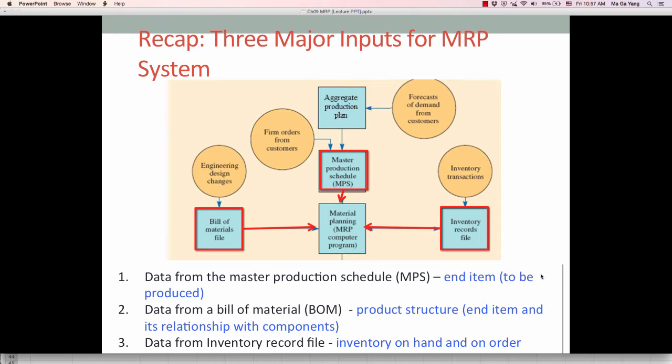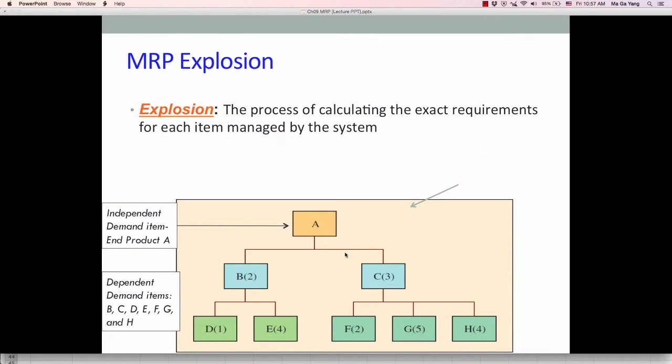Having said this, let's go to the MRP explosion. MRP explosion by definition is the process of calculating the exact requirements for each item managed by the system. Let me explain this based on this BOM example. Here A is the independent demand item. We call end item and product A.